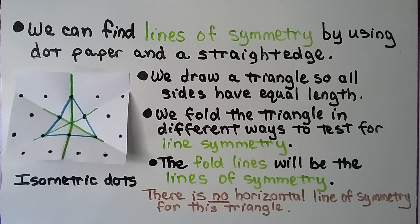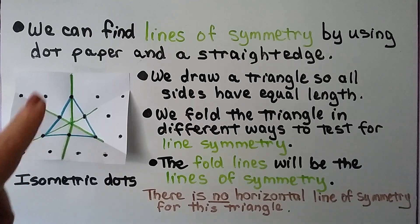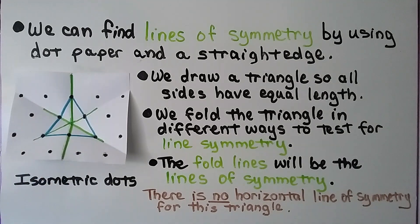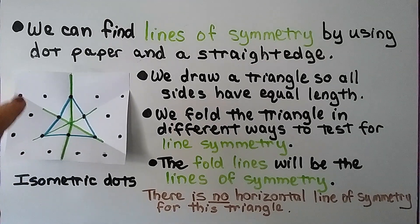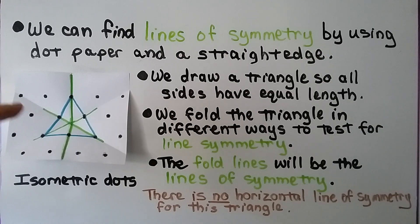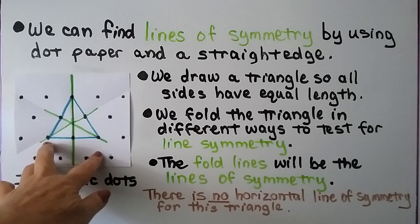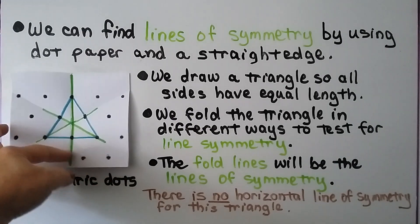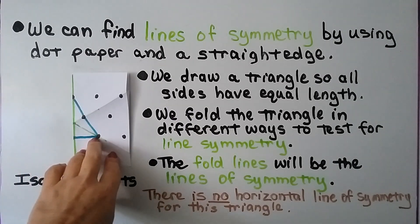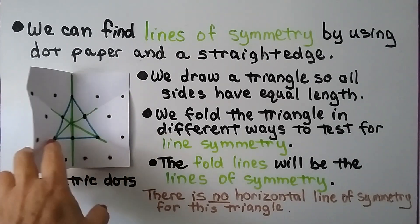We can find lines of symmetry by using dot paper and a straight edge. We draw a triangle so all sides have equal length, then fold the triangle in different ways to test for line symmetry — the fold lines will be the lines of symmetry. This is isometric dot paper, not regular dot paper. We can fold the triangle in half vertically and it will make a mirror image.